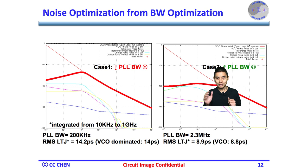Since the VCO was still the main noise contributor with optimized bandwidth, the total jitter could be reduced to 8.9 ps, which is nearly half of the previous case.